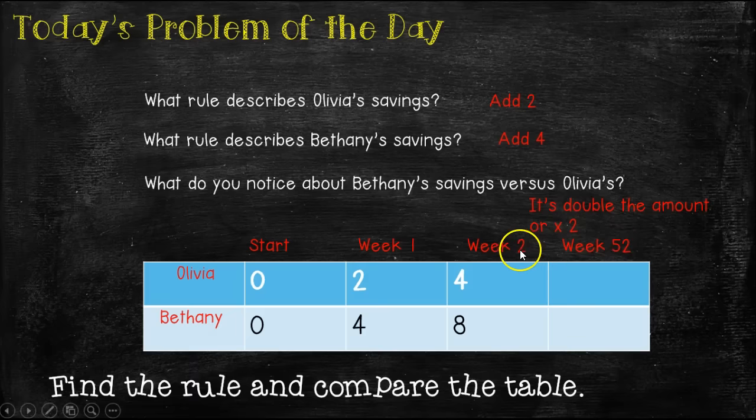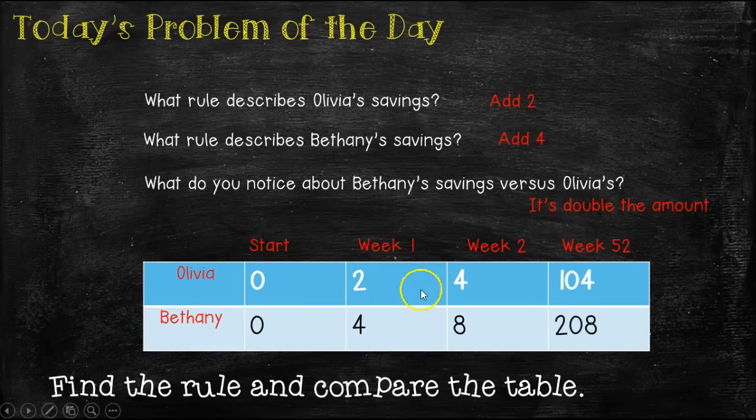Now we need to figure out week 52. Remember, there's lots of weeks between week three and week 52. So we can't just go ahead and use our rule add two here. We need to do something with the number 52 to figure out what we've got. We know that if our rule is to add two each week, repeated addition is the same thing as multiplication. So we would do 52 times two, which is 104. And then down for Bethany's, we would do 52 times four, because her rule was four in between each week. And that equals 208.